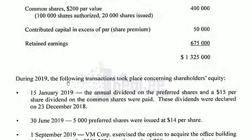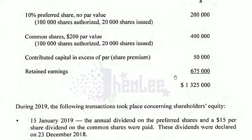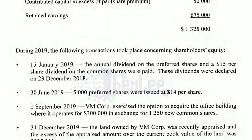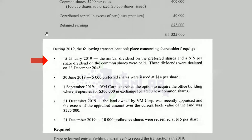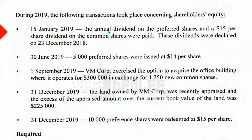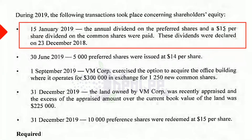During 2019, the following transactions took place concerning shareholders' equity, and you are required to prepare journal entries without narratives to record the transactions in 2019. We begin with the first transaction: January 15, 2019. The annual dividend on the preferred shares and the $15 per share dividend on common shares were paid.